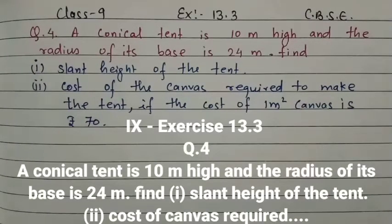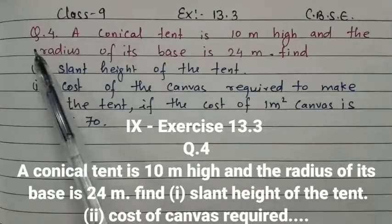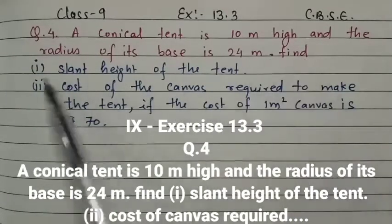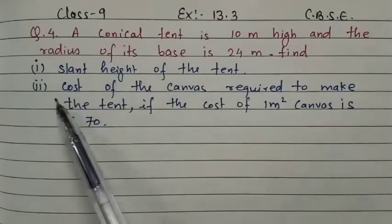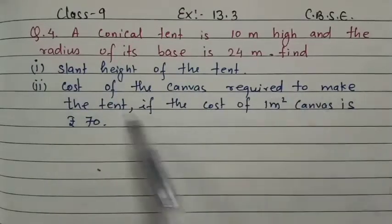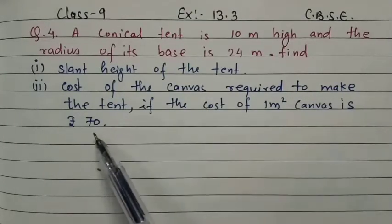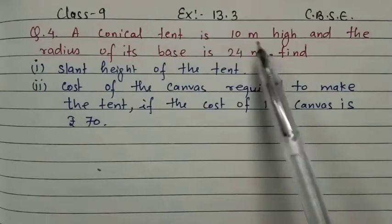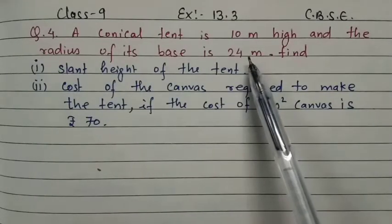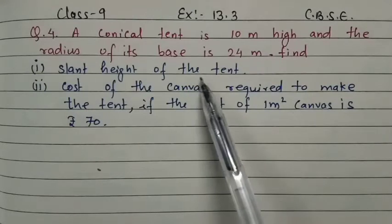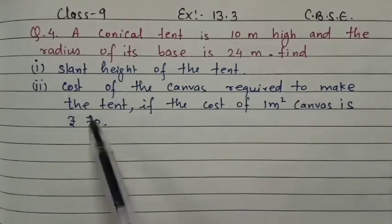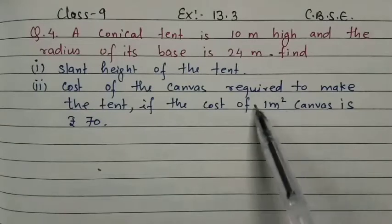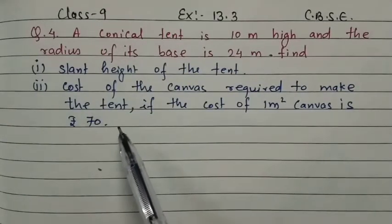Hello everyone, Key 4 Learning. Welcome to this video. We will solve Class 9 Exercise 13.3 Question 4. The question is: a conical tent is 10 meters high and the radius of its base is 24 meters. Find first, the slant height of the tent, and second, the cost of the canvas required to make the tent if the cost of one meter square canvas is ₹70.